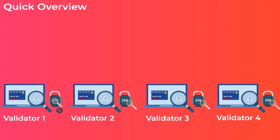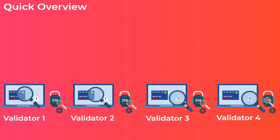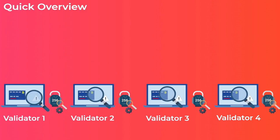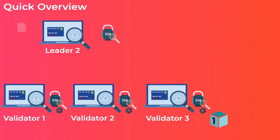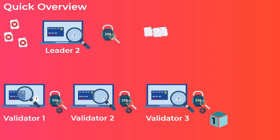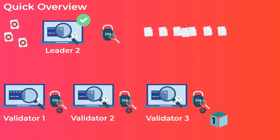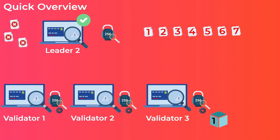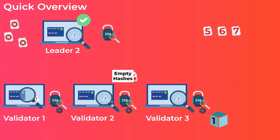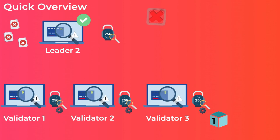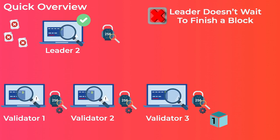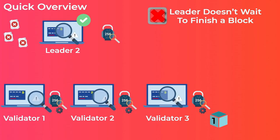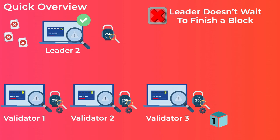Here is a quick overview of the entire Proof of History mechanism. Validators run the hash function constantly to count ticks and know when it is their turn to be leaders. When a validator becomes a leader, it starts receiving transactions, removes invalid or fraudulent ones, executes the valid transactions, updates its ledger, and then orders transactions by including them in hashes. The leader sends finished transactions with hashes to validators as it works on the rest — without waiting to finish a full block — which helps Solana achieve fast confirmation times.